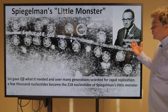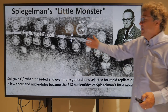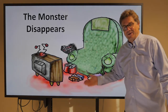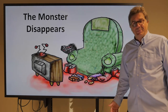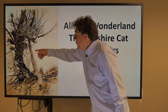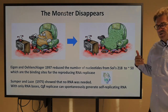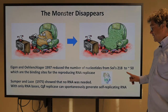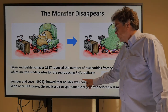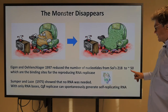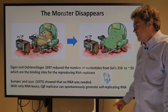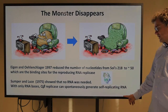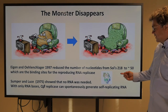How far can you go making the monster disappear — like the Cheshire Cat in Alice in Wonderland? A 1997 paper reduced the nucleotides from Spiegelman's 218 down to 50, which are the binding sites for the reproducing RNA replicase — so 50 were a minimum. But earlier, Sumper and Luce in 1975 showed that no RNA was needed at all: with only RNA bases, Q-beta replicase can spontaneously generate self-replicating RNA. So it's like going from 50 to zero.